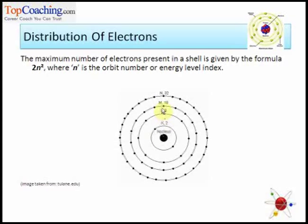M is at third place from the nucleus. So orbit number for M is 3. And hence the number of electrons in the third orbit, which is orbit M, is square of 3, which is 9 into 2. And it comes out to be 18.